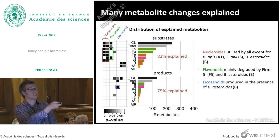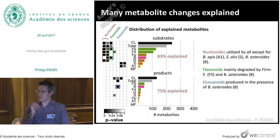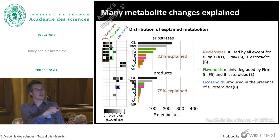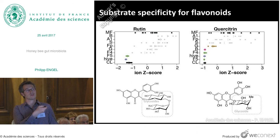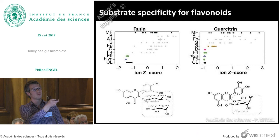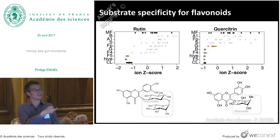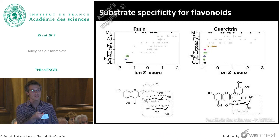For example, the firmicutes — abbreviated as F5 and F4 — were responsible for most of the metabolic changes identified in our colonized bees. Nucleosides were utilized by almost all bacteria except Snodgrassella, alpha-1, and possibly also Bifidobacterium — and these are exactly the bacteria which can synthesize nucleotides by themselves, so they don't need to take them from the environment, while the others have to. Flavonoids were mainly degraded by the Firm-5 group, so we can now say which bacterium is responsible for degrading this class of compounds. Eicosanoids and juvenile hormones were triggered almost exclusively by Bifidobacterium in our system. There also seems to be substrate specificity for flavonoids within this gut microbial community.